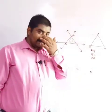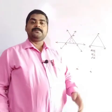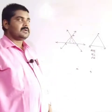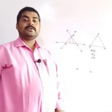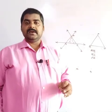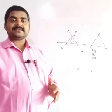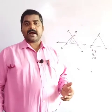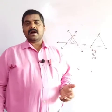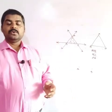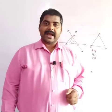As you have already learned in previous standards and in the previous chapter regarding polygons, a triangle is the first member of the polygon family. So a triangle can be defined as a polygon bounded by three line segments.